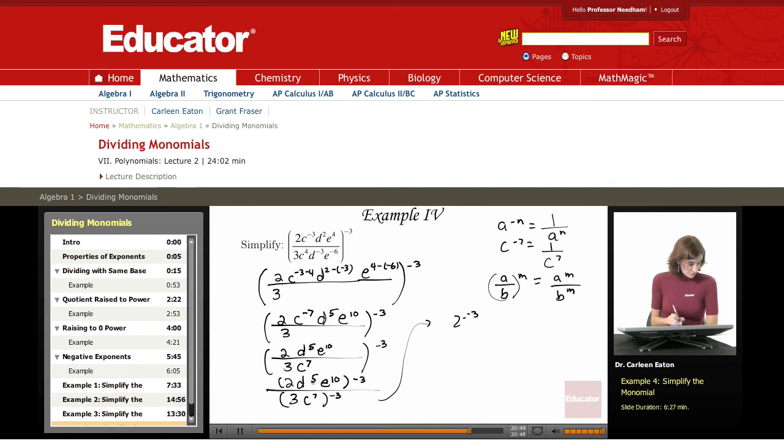Five times negative three is going to be D to the negative fifteen. And then I've got E to the tenth raised to the negative three. I multiply ten times negative three and get E to the negative thirtieth power.